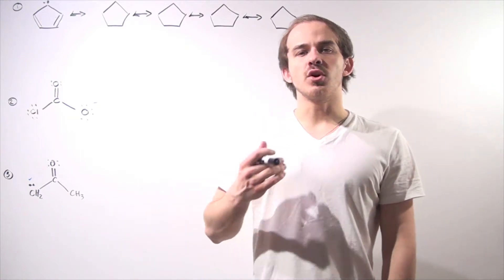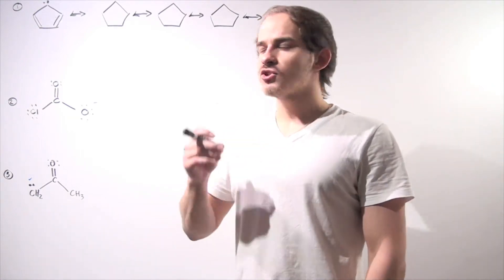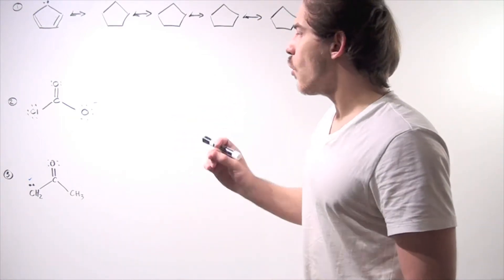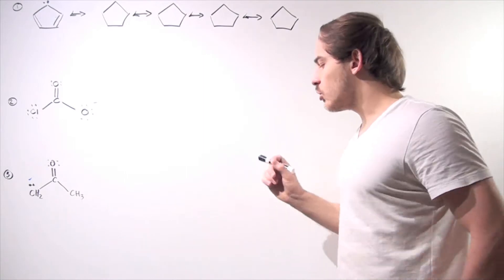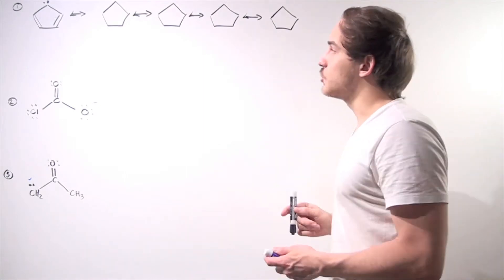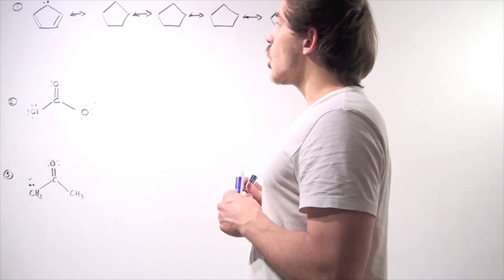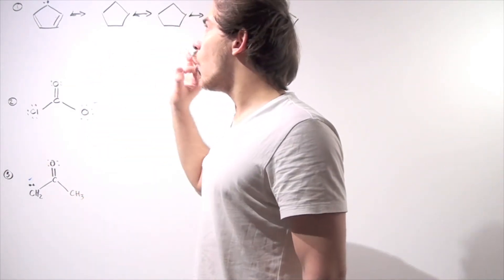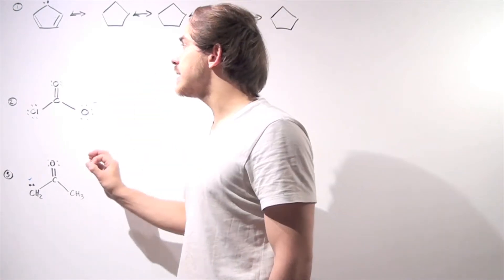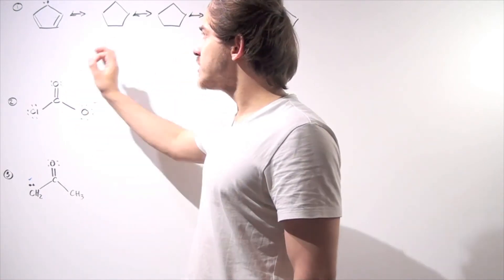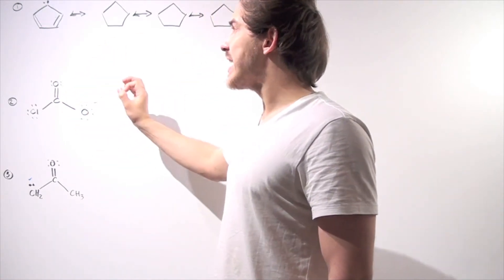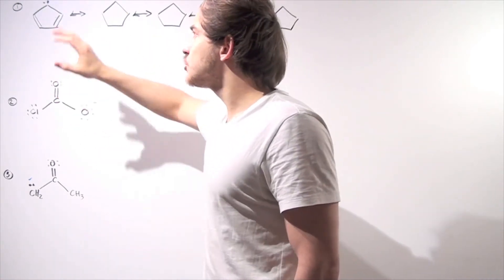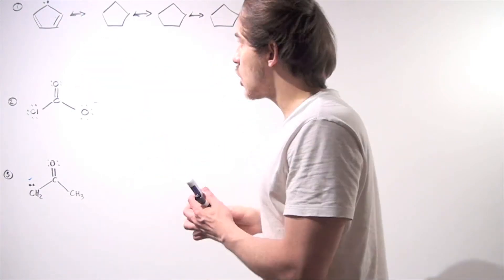In this lecture, we're going to practice drawing resonance structures for the following three molecules — one, two, and three. We want to find all the different types of resonance structures that contribute to the actual structure of each molecule.